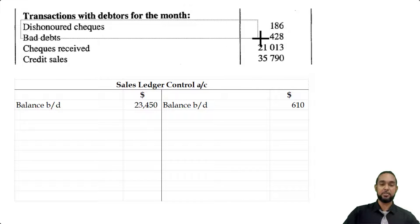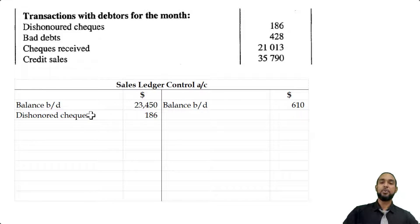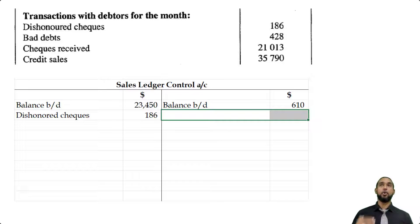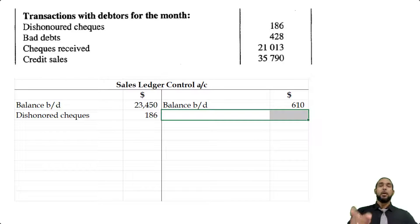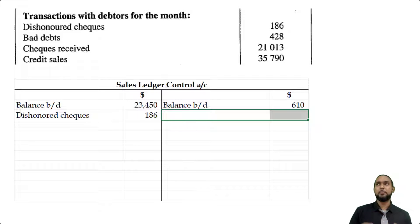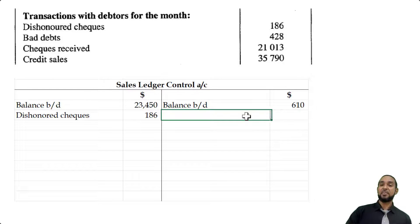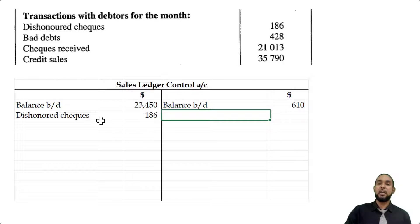Transactions with debtors for the month: a dishonored check goes on the debit side. Normally when we receive a check from a debtor it goes on the credit side because the asset decreases. But if the check is dishonored — maybe they didn't sign it, wrong date, or insufficient funds — we didn't actually get the money, so we undo the decrease by debiting. Bad debts of 428 go on the credit side: we write off debts we can no longer reasonably expect to collect, removing them as an asset via a credit. Checks received also go on the credit side — they're paying us, so the asset decreases.